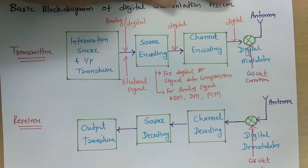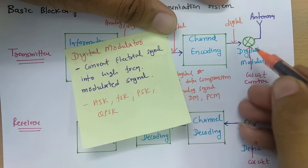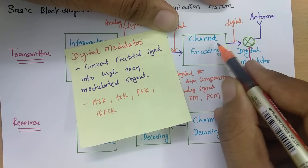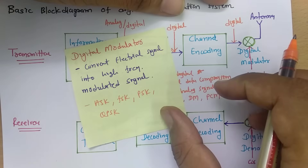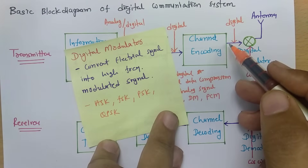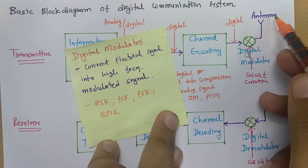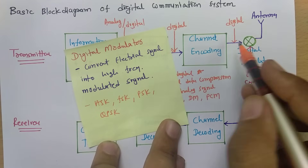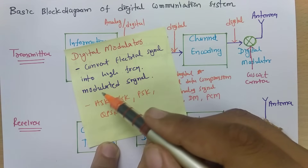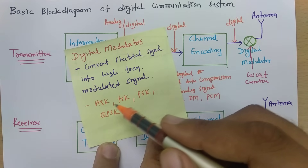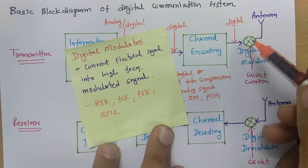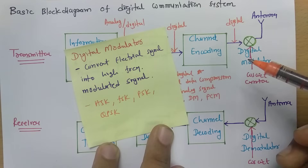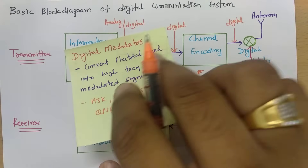After channel encoding, there is the digital modulator. It takes two inputs: the channel-encoded digital output and a high-frequency carrier signal. To send a signal over long distances via antenna, the low-frequency digital signal must be translated into a high-frequency analog signal. Techniques like ASK are used to produce this high-frequency modulated signal.